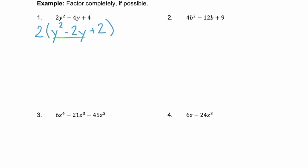Step two — we look at this remaining polynomial. It's not four terms, so we can't factor by grouping. It's not two terms or a binomial. It's three terms, but it doesn't appear to be a perfect square trinomial. We need to find two factors m and n that multiply to 2 and add to negative 2. The factors of 2 are 1 and 2, but there's no way to add 1 and 2 and get negative 2. So we were only able to factor out the GCF of 2. Our factored form is 2 times (y squared minus 2y plus 2).